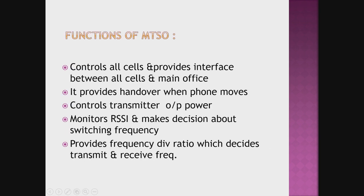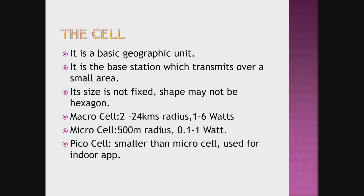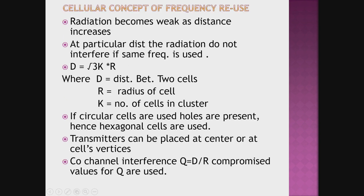In summary, the cell is a basic geographic unit that transmits over a small area and is called a base station. Its size is not fixed, but its shape is approximately hexagonal — circular shape is not used. Macro cell, micro cell, and pico cell types are used. The radiation becomes weak as the distance increases, and cells that do not interfere can be designed using d = √(3k × r). Transmitters can be placed either at the center or at the vertices of the cell. Co-channel interference is also dependent on the distance between cells and the radius of the cell.